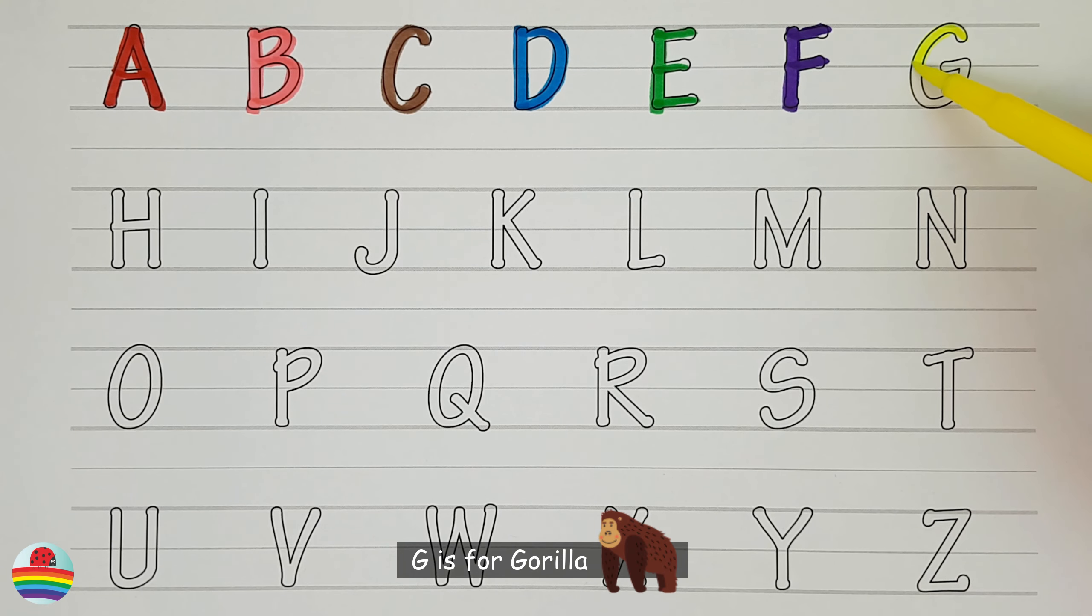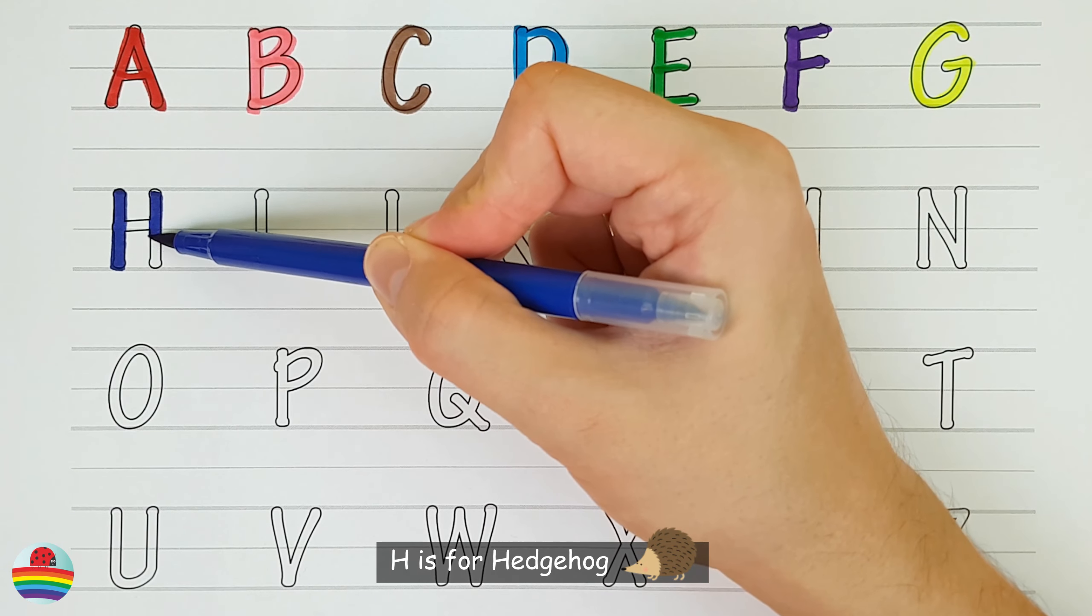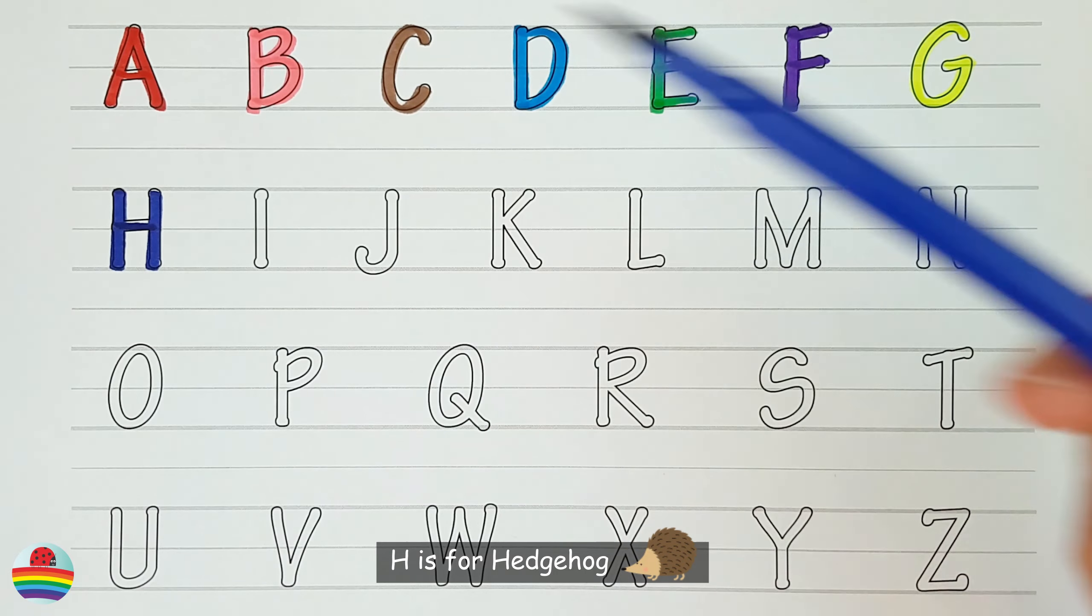G. G is for gorilla. H. H is for hedgehog.